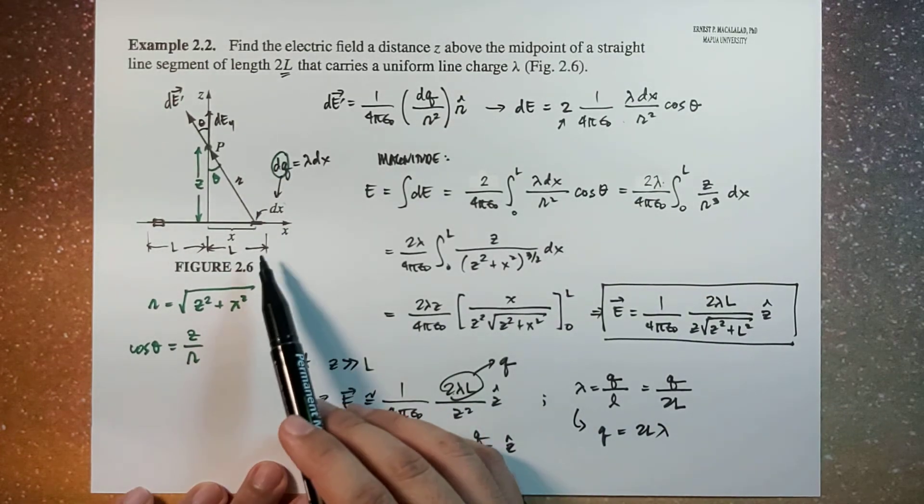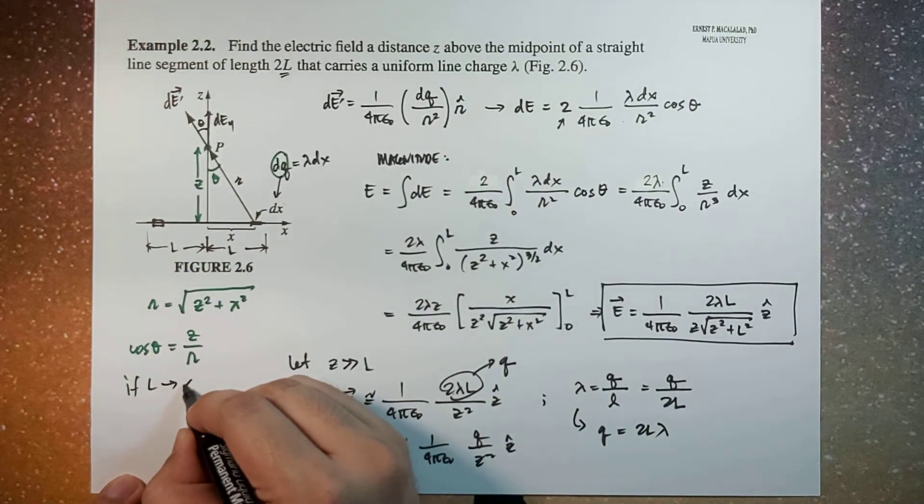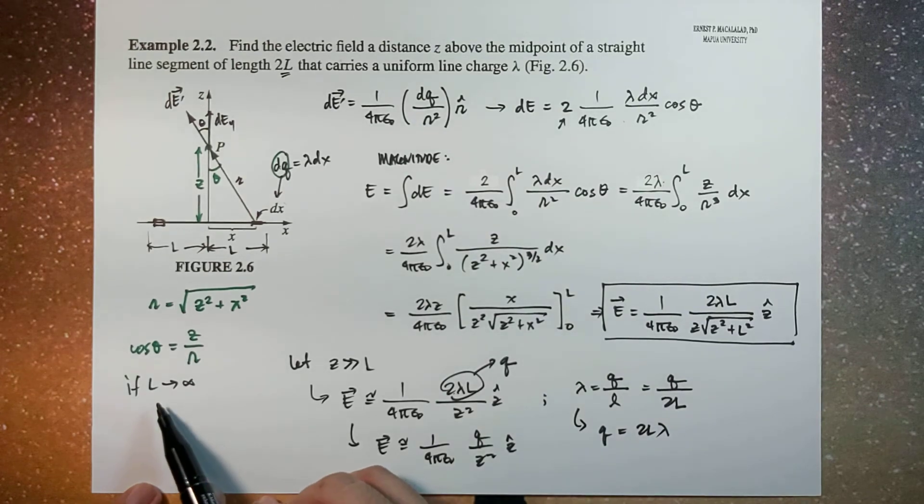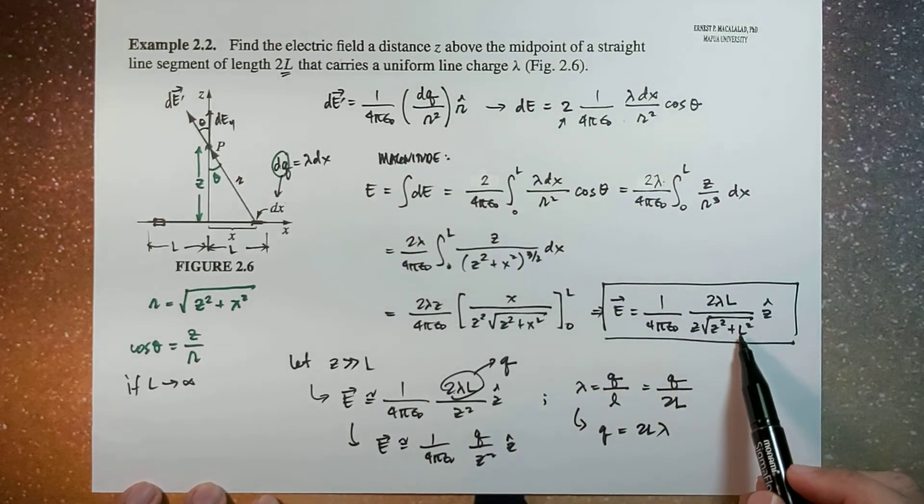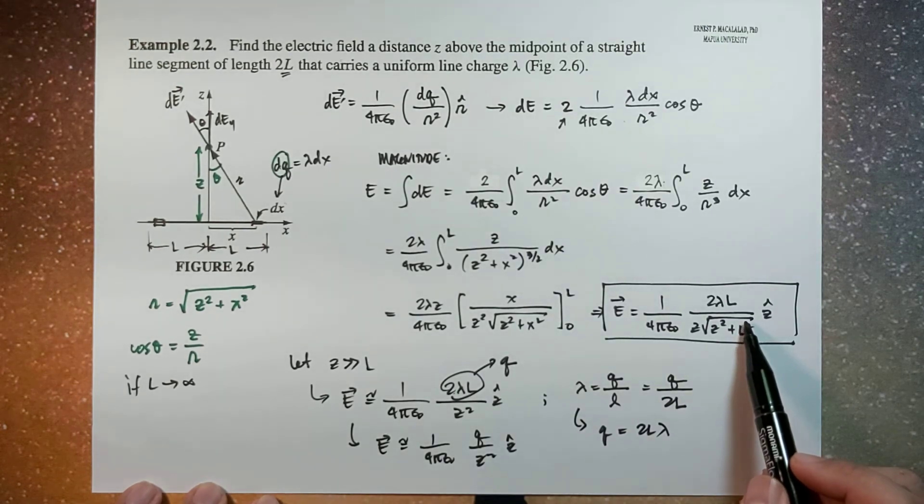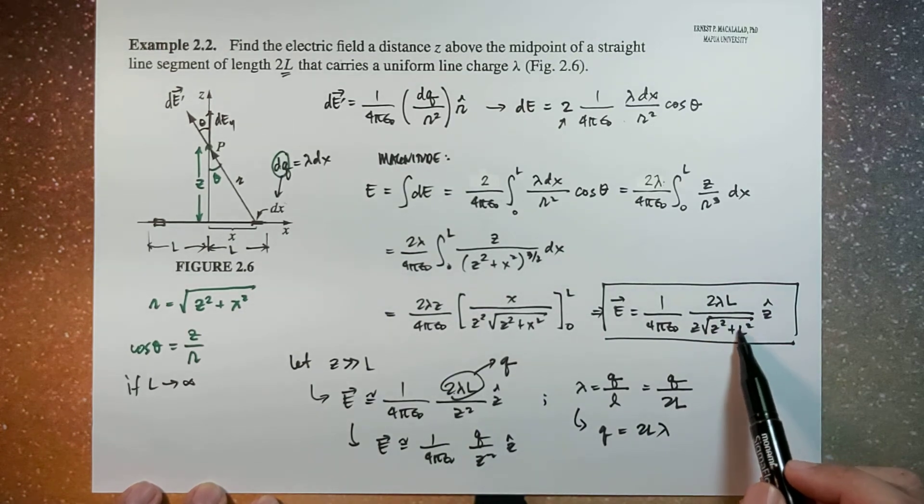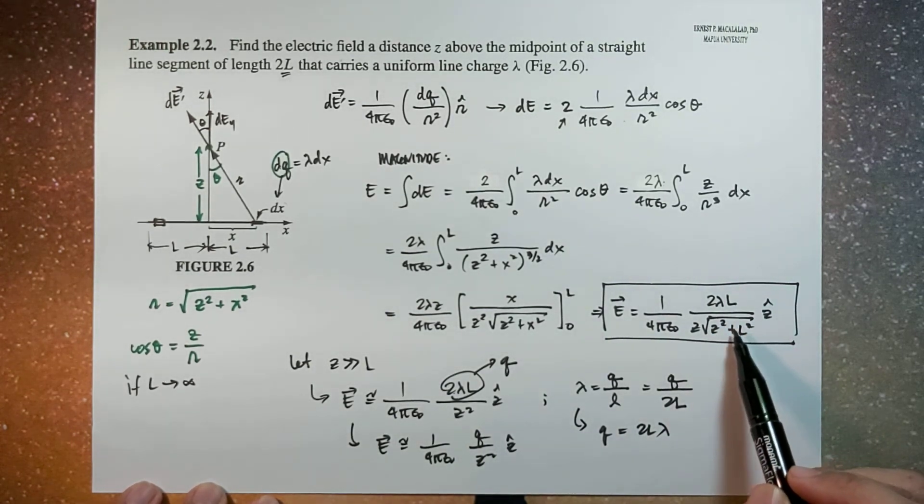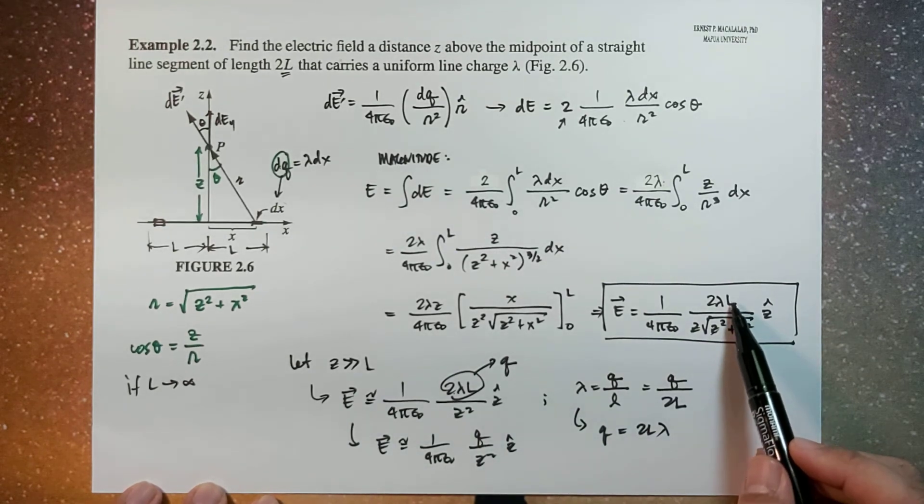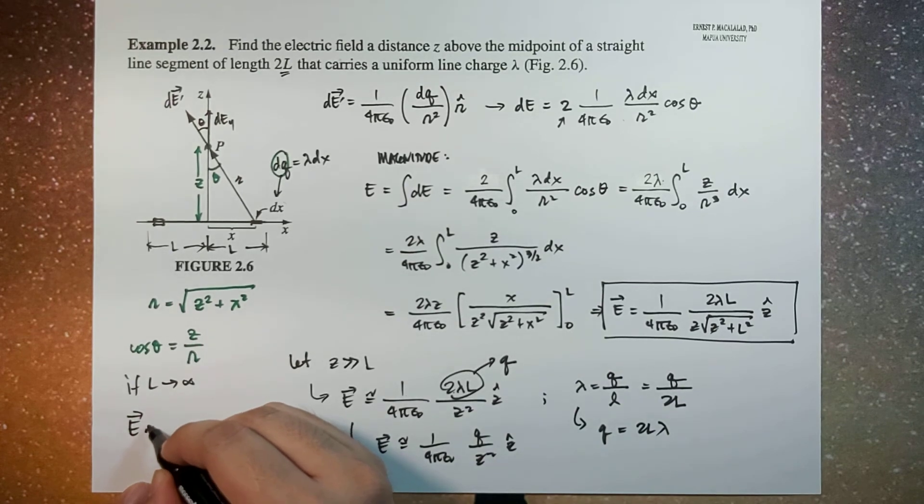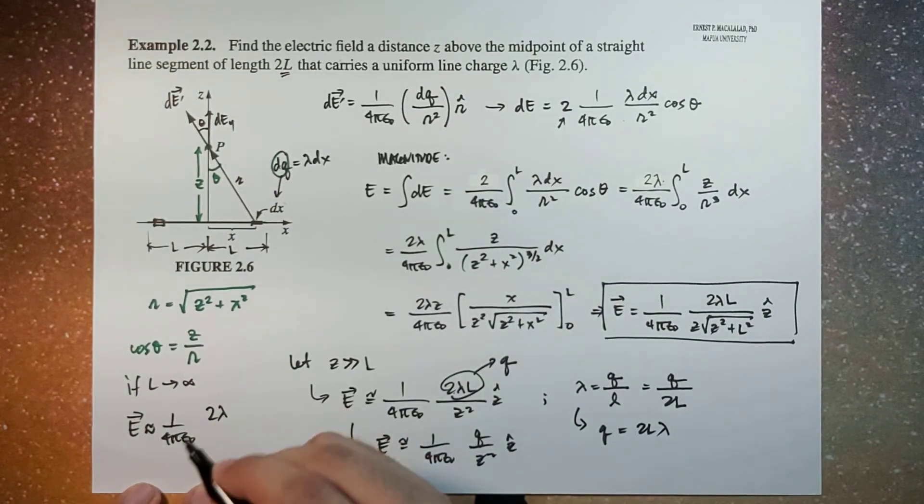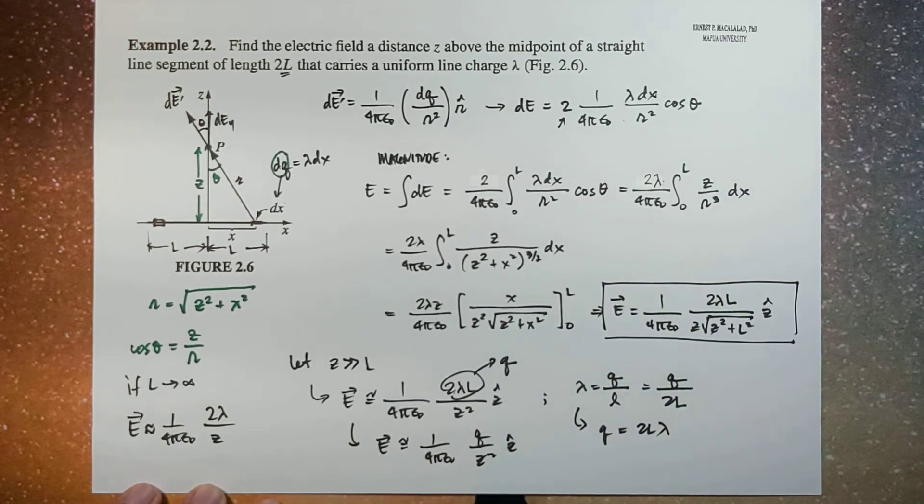Now what happens now if we let L approach infinity? So that means we're looking at an infinite wire segment. So if L is very large, in this radical, z will be neglected because this is very much larger than z. So this becomes L, then L will just cancel with L. So that means E will just be approximately equal to 1 over 4 pi epsilon times 2 lambda over z.